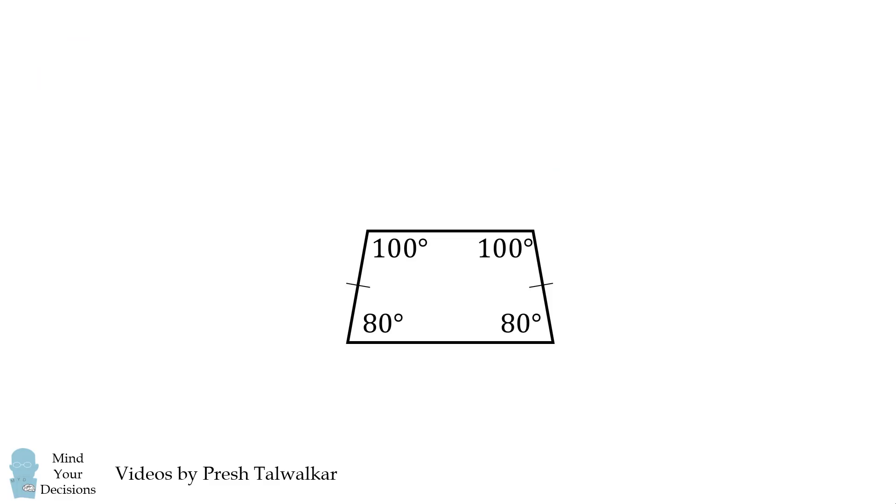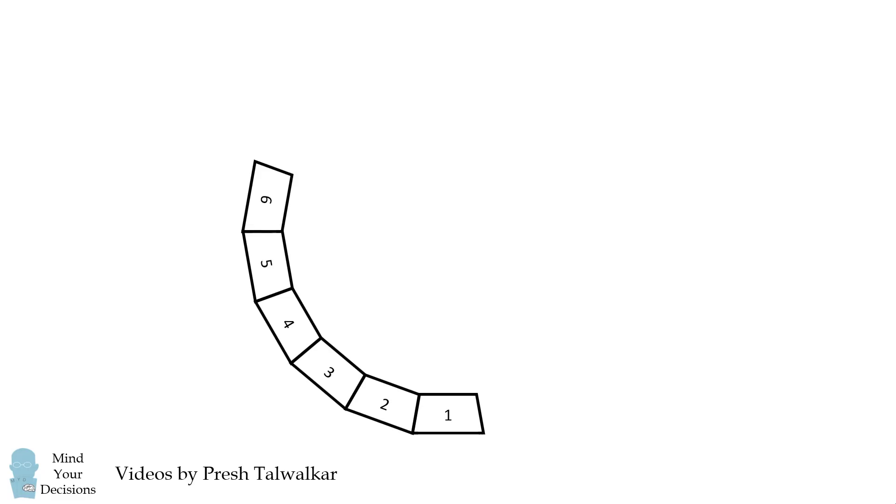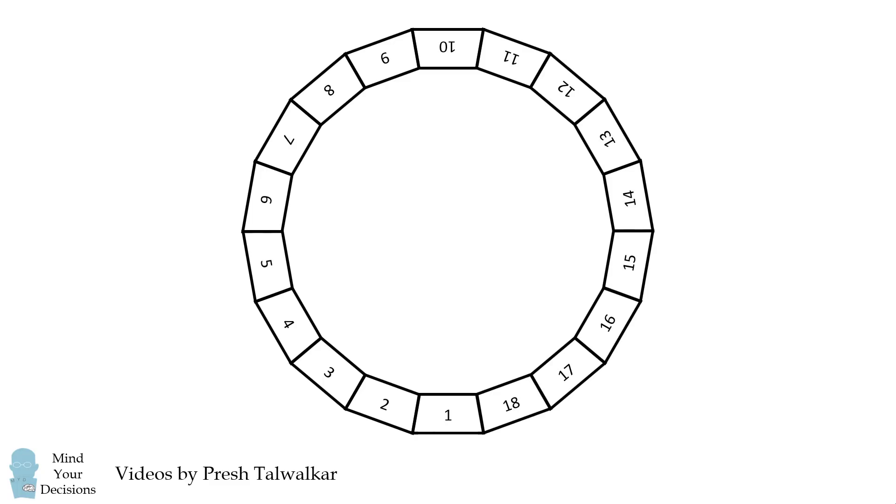So how can we solve this problem? We can actually simulate it on the computer quite nicely. We can place trapezoids adjacent to each other until we form a closed ring. We then just need to count the total number of trapezoids, and there we go. We get our answer of 18.